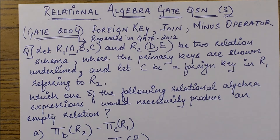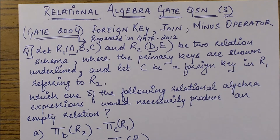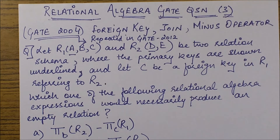In this session we are going to take up a relational algebra GATE question which has come twice in previous years — first in GATE 2004 and then in GATE 2012. It is a very simple question. The examiner wants to check your knowledge about foreign key and primary key concepts. The question combines concepts of foreign key, join, and the minus operator.